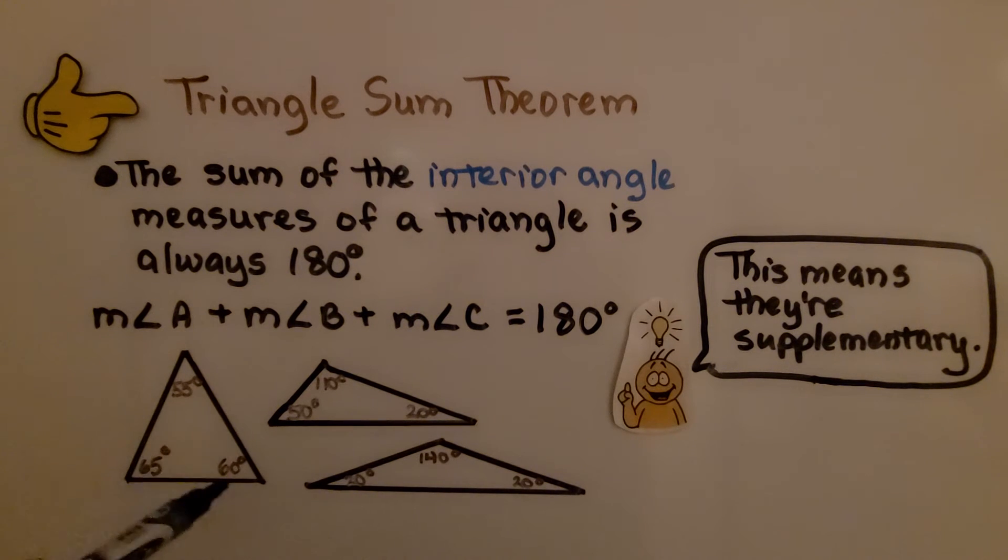And it doesn't matter what type of triangle we have. We have a 55-degree angle, a 60-degree angle, and a 65-degree angle. That's going to total 180. Here we have 110, 20, and 50. That equals 180.